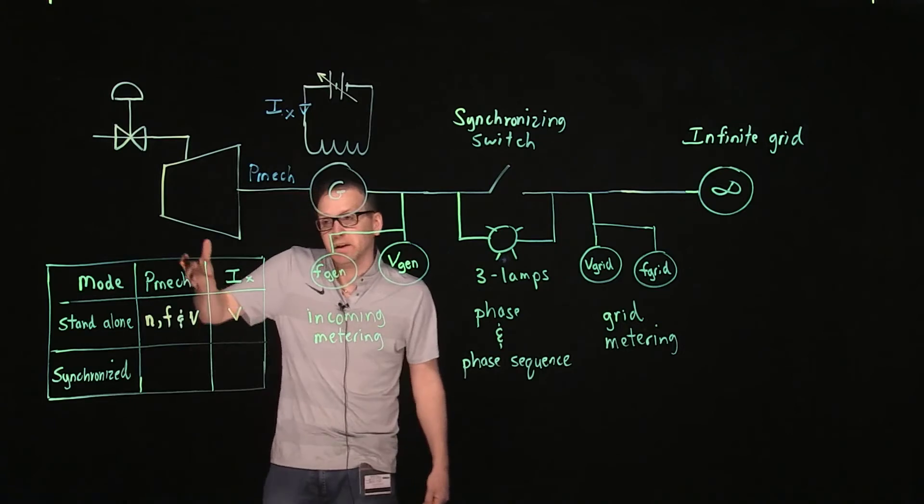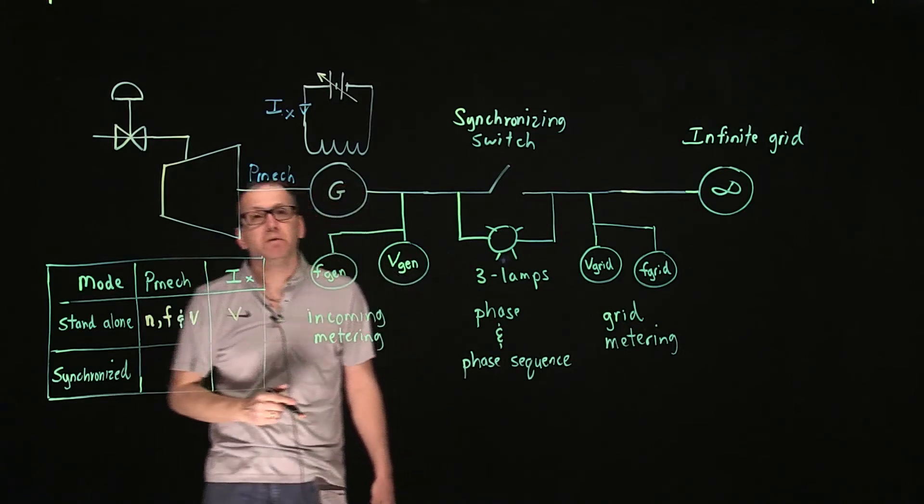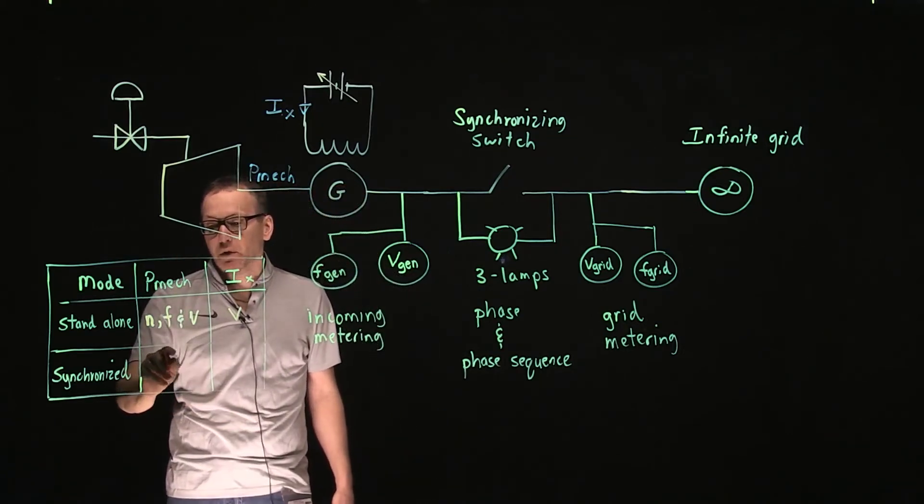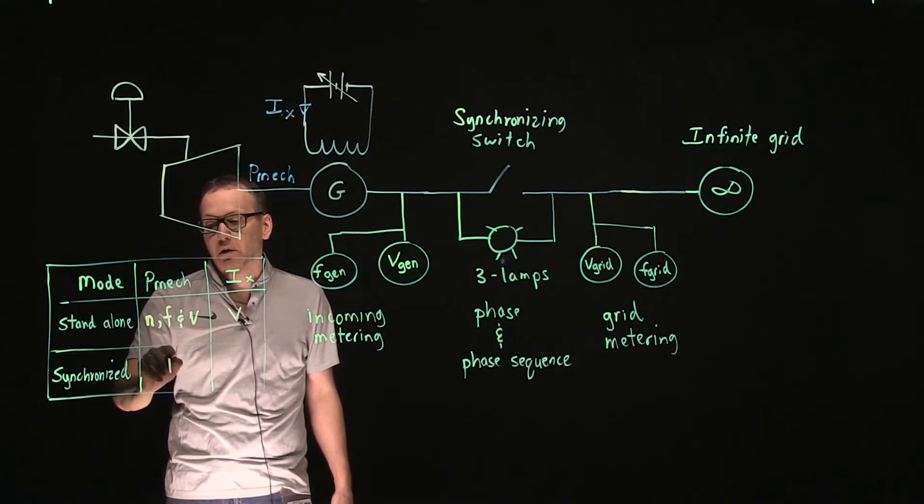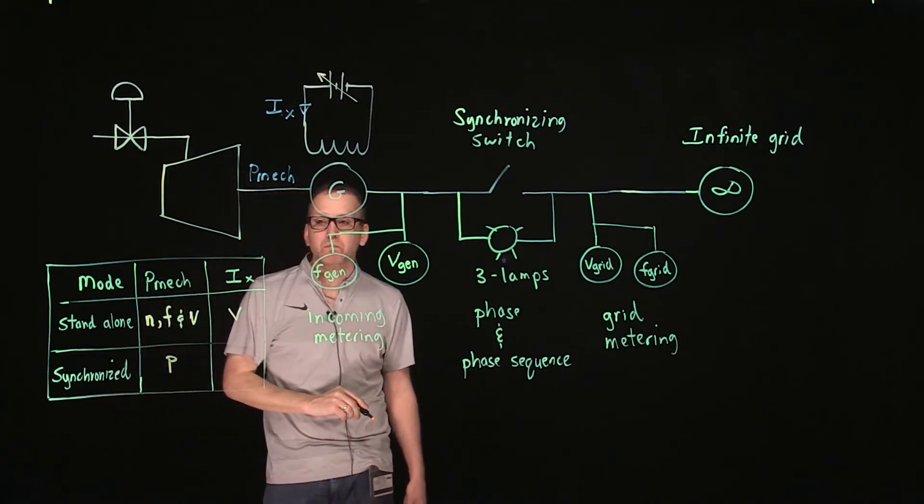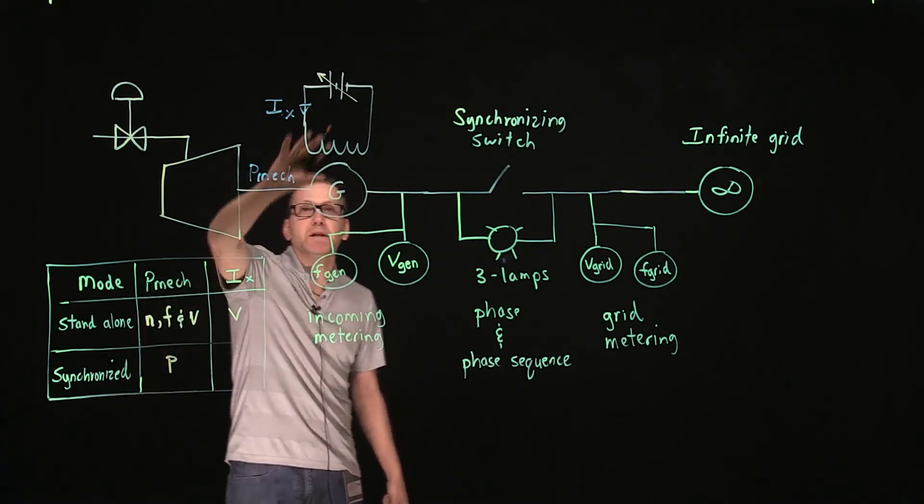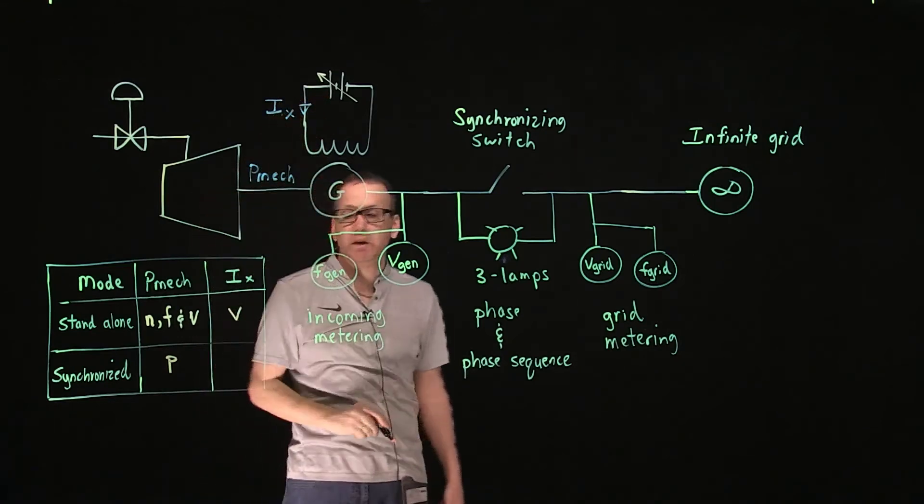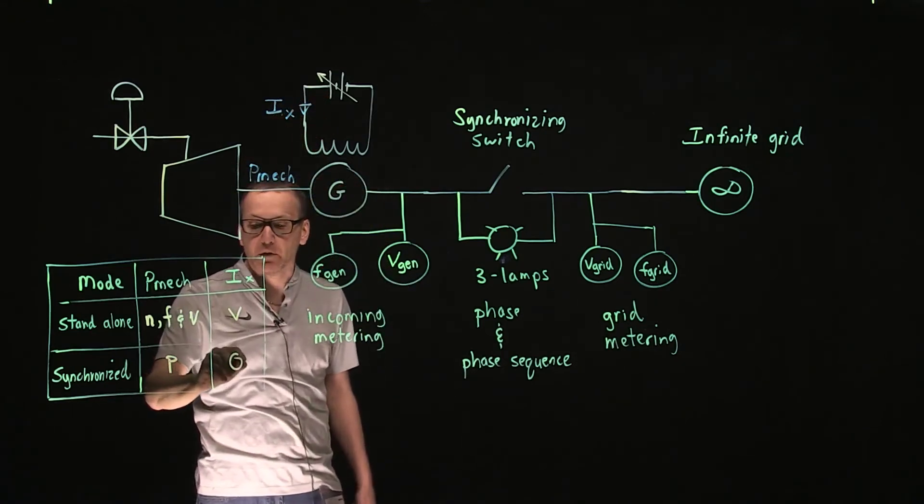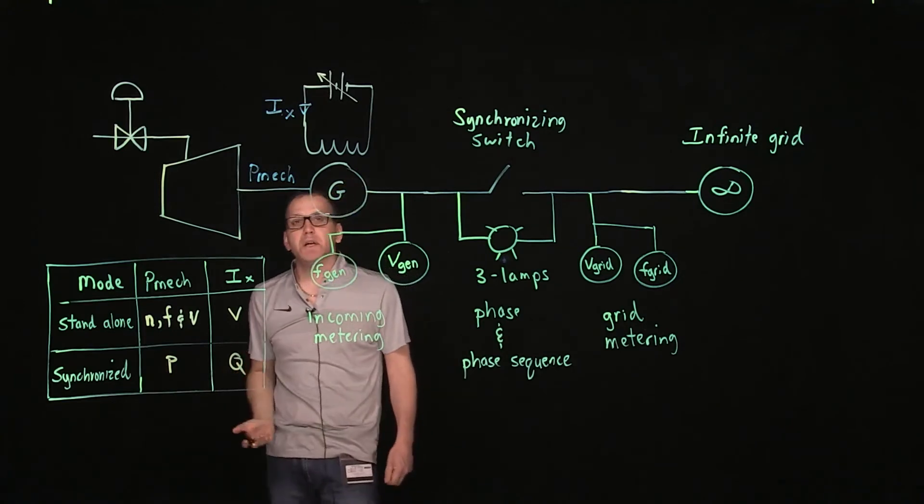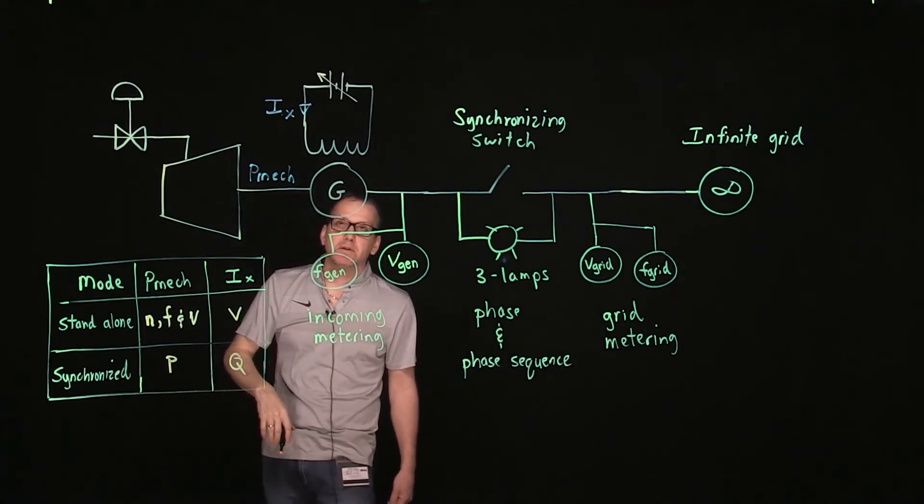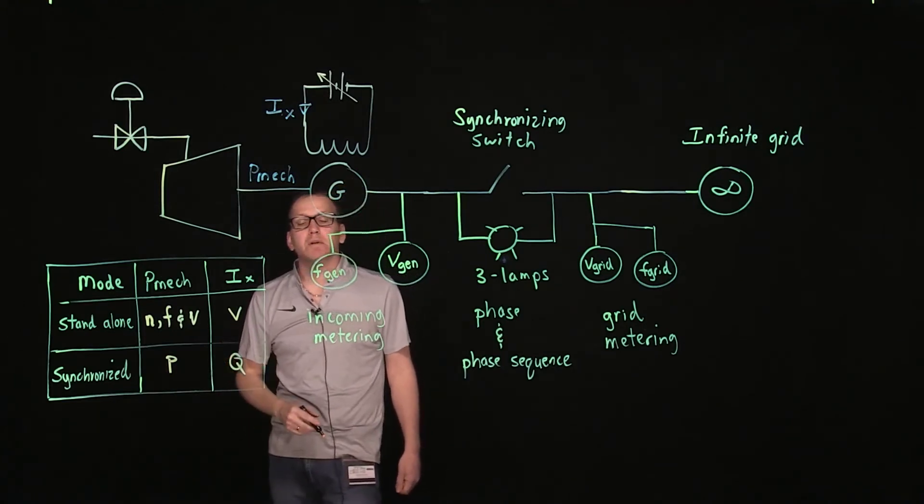When we're operating in synchronized mode and we adjust the mechanical power input to the generator, the only thing we can adjust is the real power or the P. By adjusting the excitation, the only thing we adjust is the reactive power or the Q. We can over-excite or under-excite the machine to import or export reactive power, and we can also import or export real power.